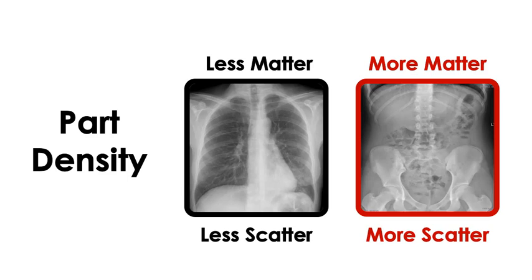The abdomen though is approximately the same thickness, but much more dense. This means there's more matter, more scatter, and the overall image is going to be lower contrast.